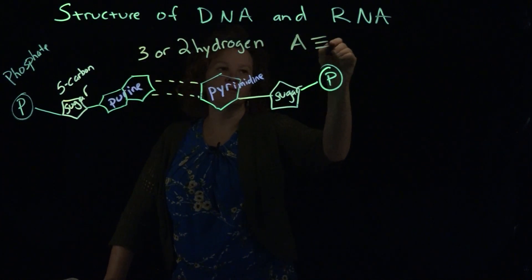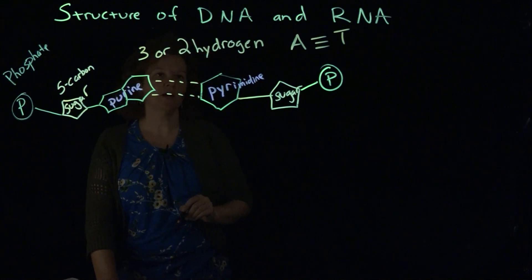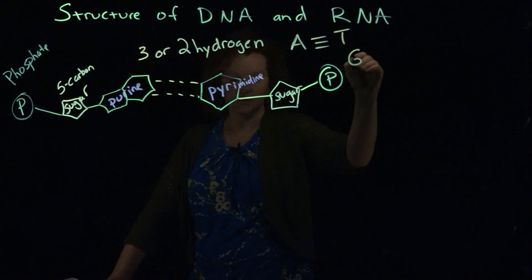A's and T's, adenine and thymine are held by three hydrogen bonds, guanine and cytosine.